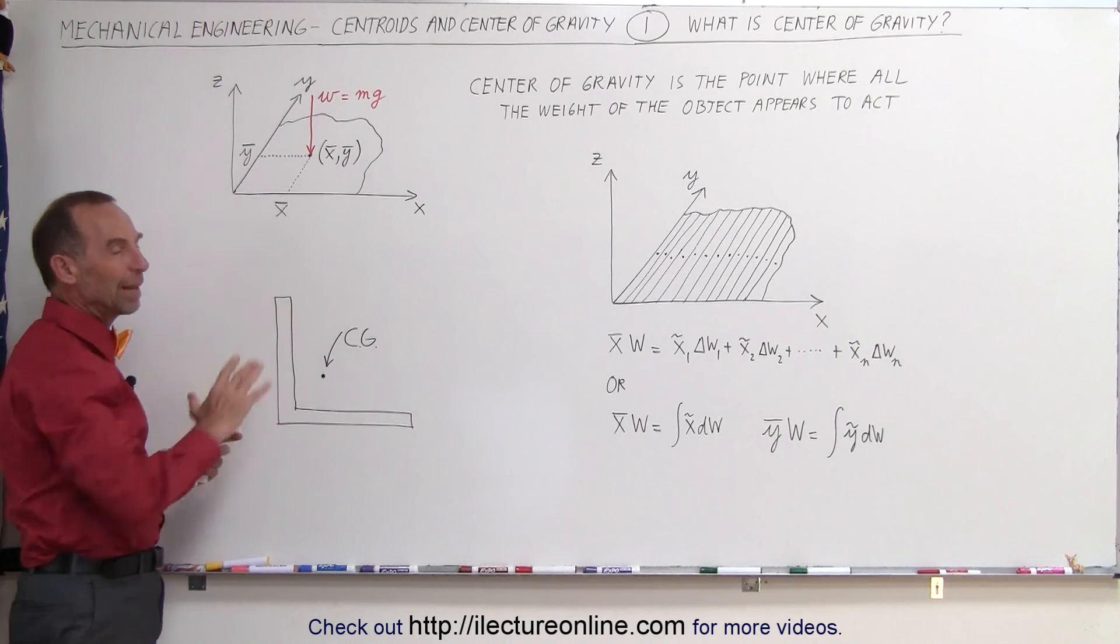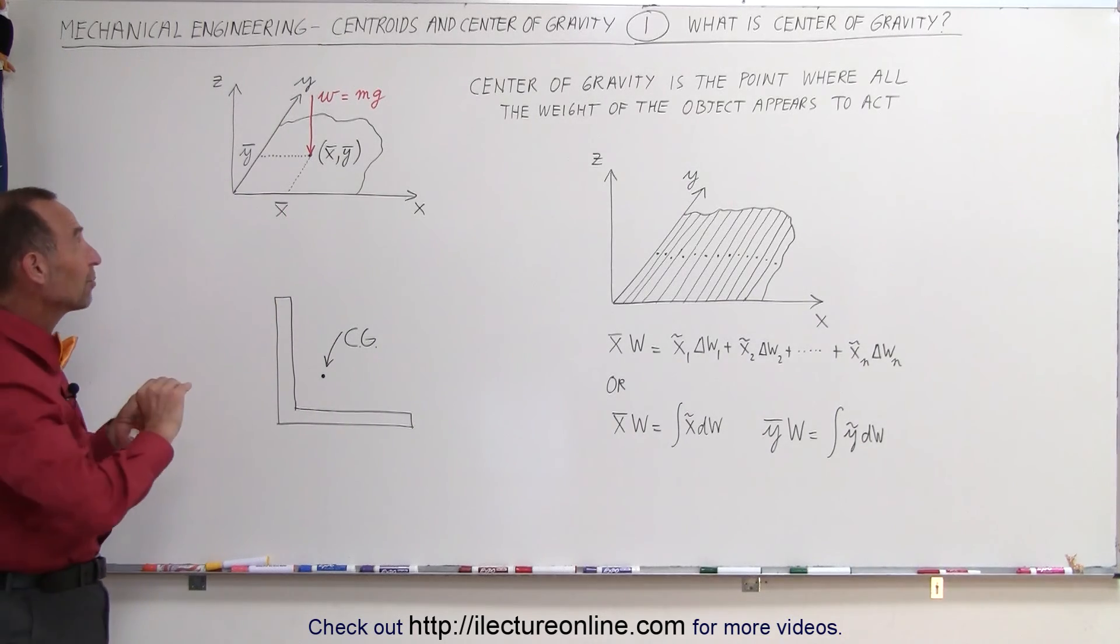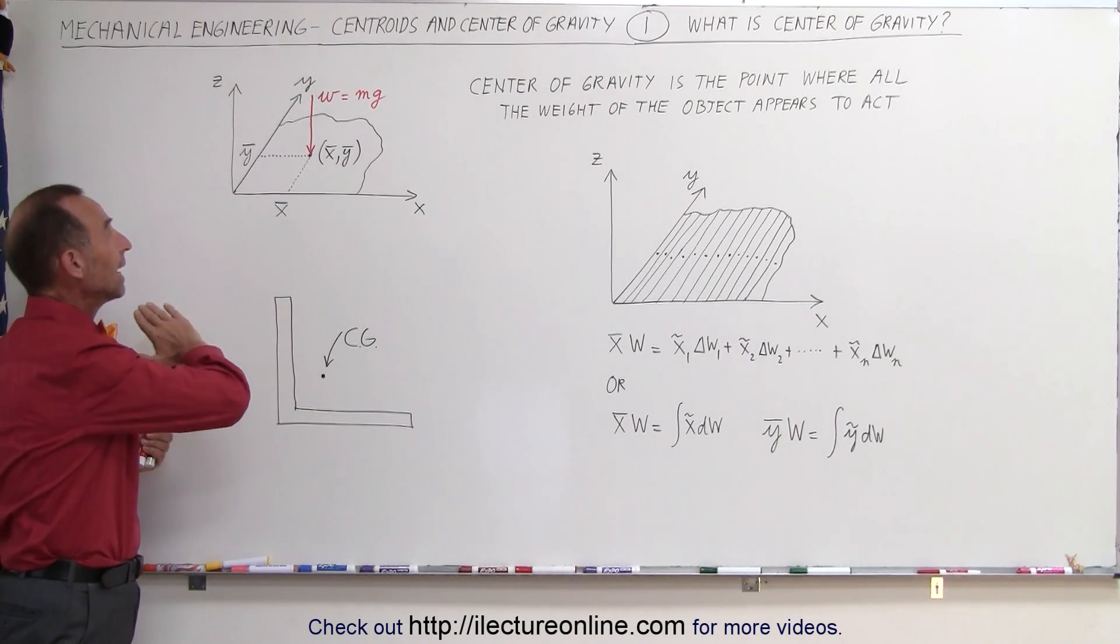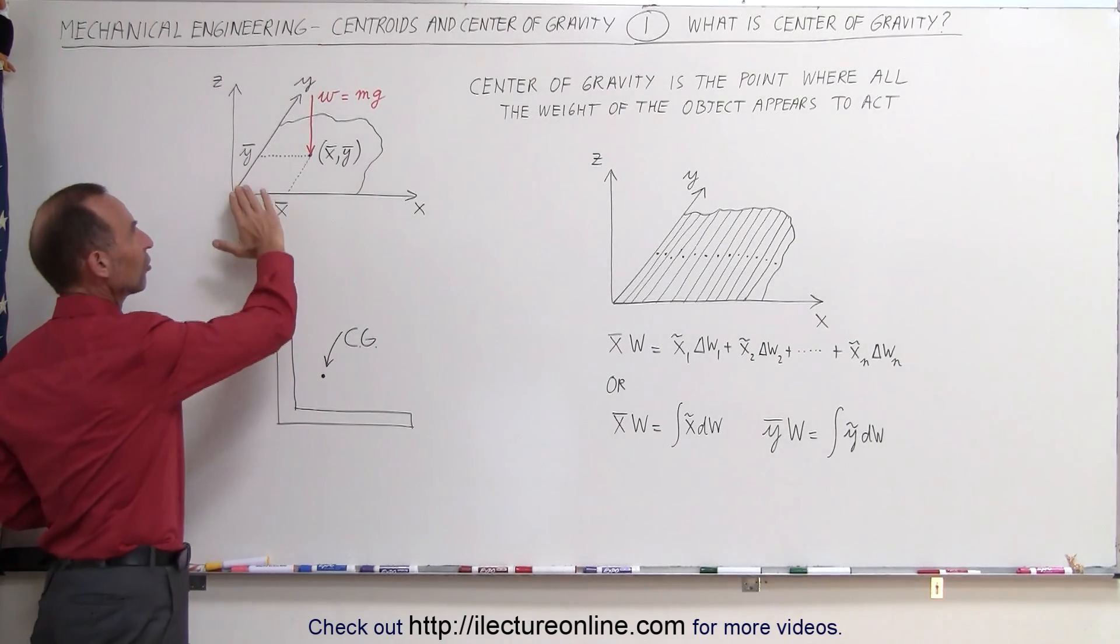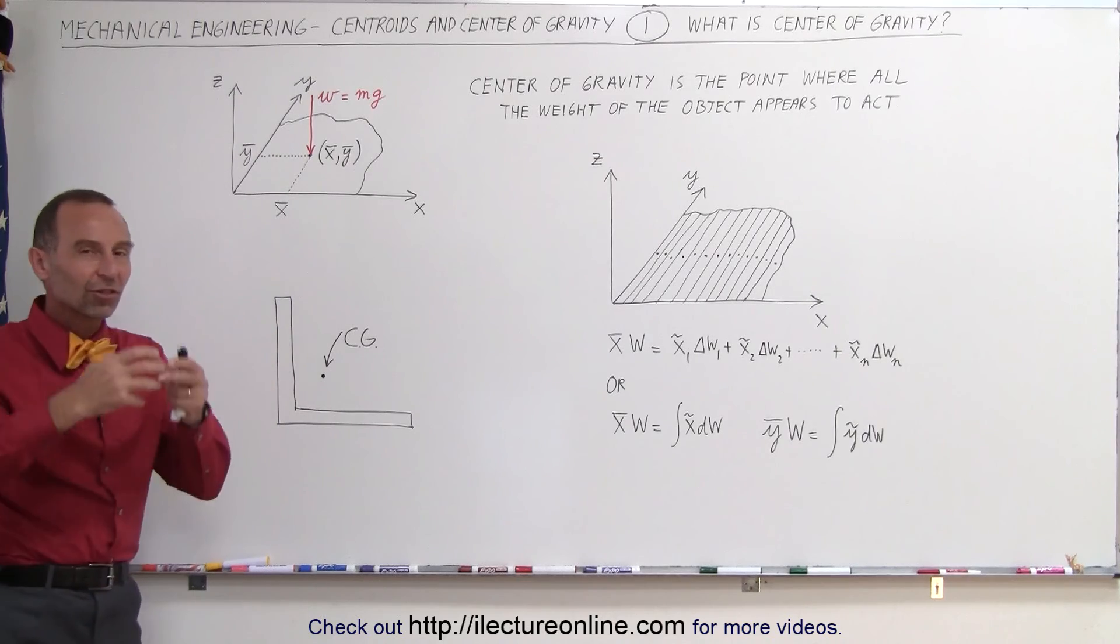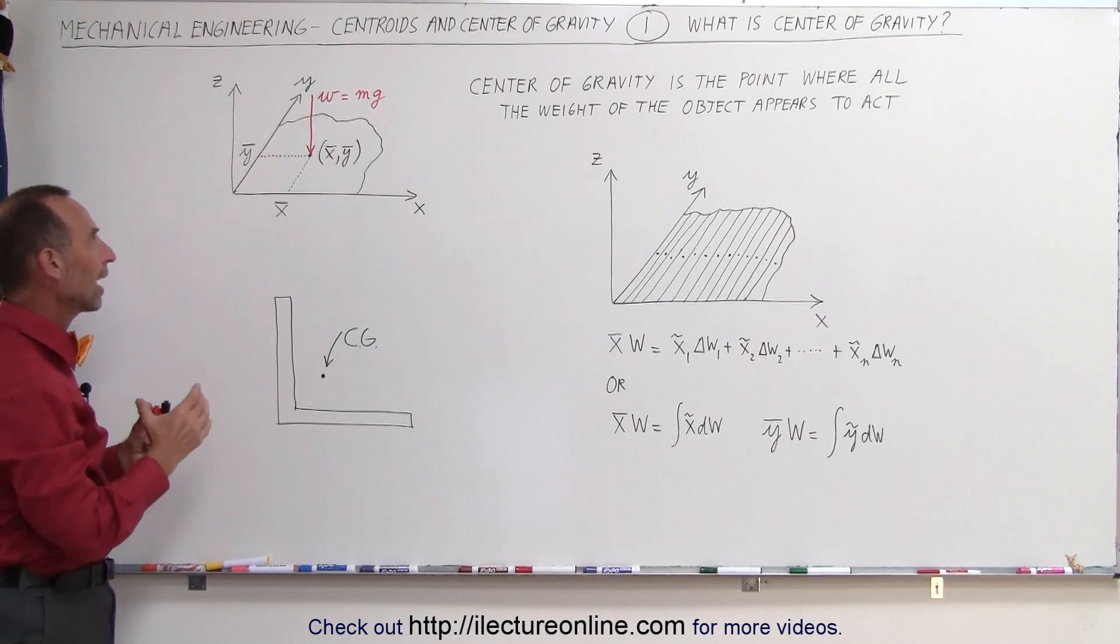Here we have an object, and to make things a little bit simpler, let's have an object that only extends out in the x and y direction. The z direction, let's say that it's fairly flat. But this object has a certain amount of mass, and therefore since it's attracted to the center of the earth, it also has some weight.